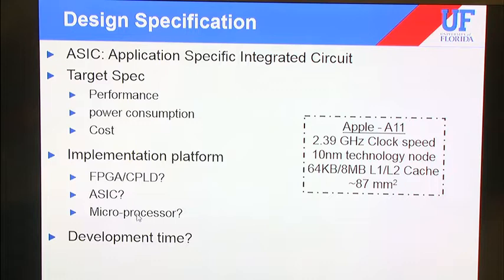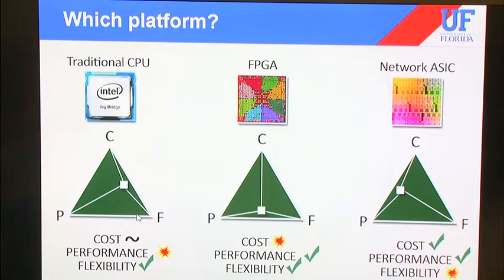The next thing is: what is the technology node and what is the implementation platform? For implementation platform, you actually have three options: FPGA or CPLD, ASIC design, or microprocessor. Which one you choose depends on performance requirements, production volume, and how much flexibility you want. If you go for a microprocessor, you can implement programmable designs, but it has severe performance issues, though it offers some flexibility and cost leverage.